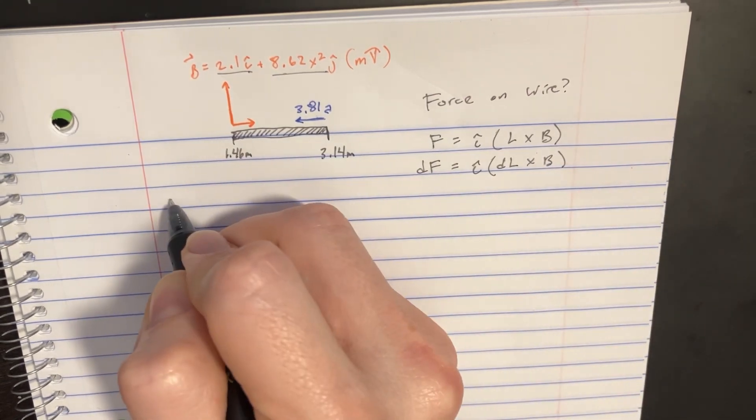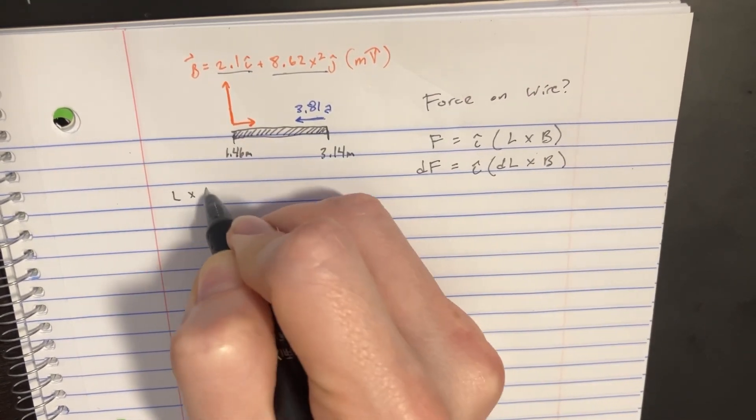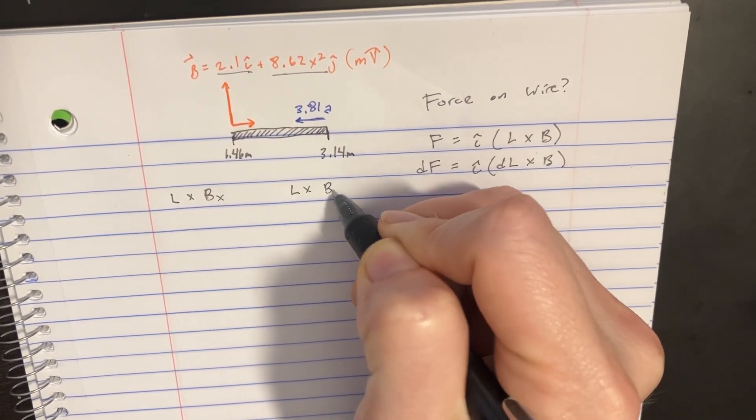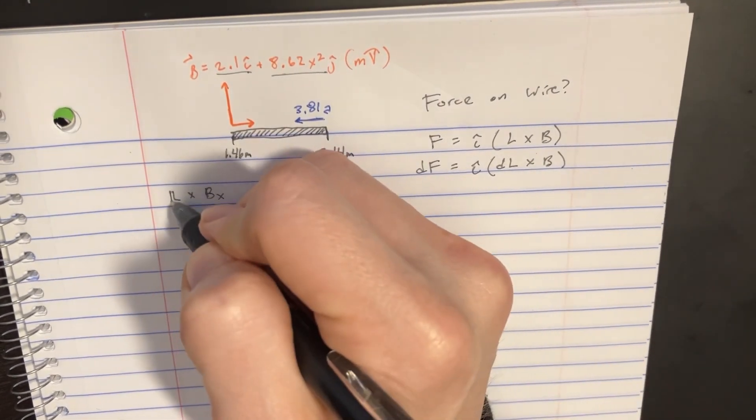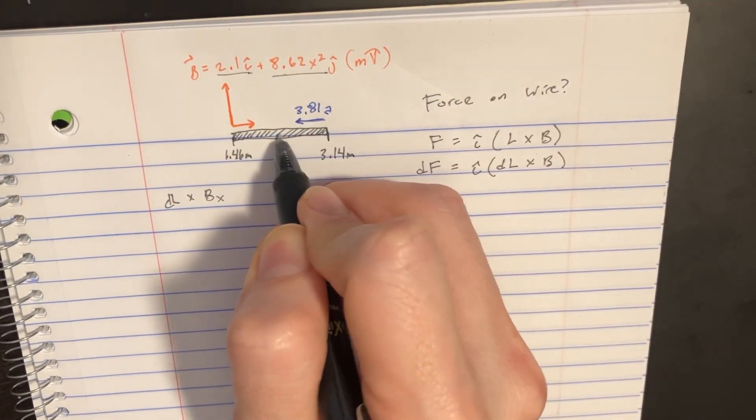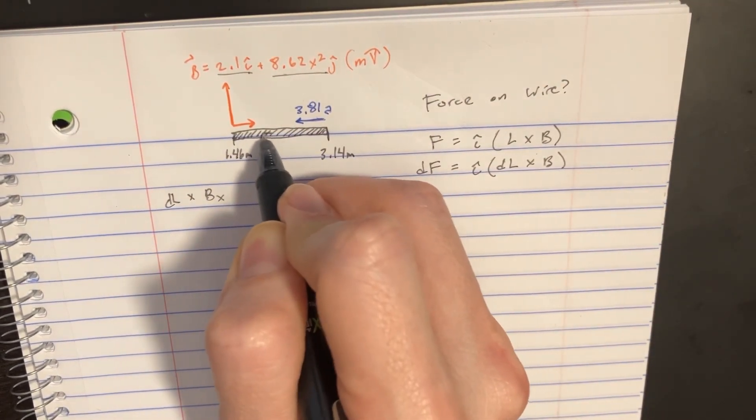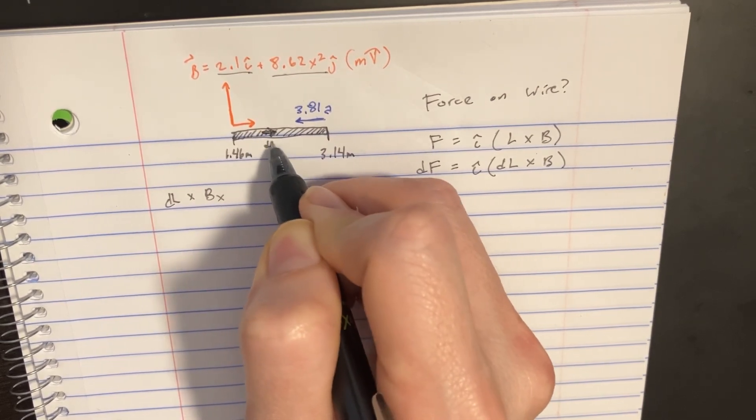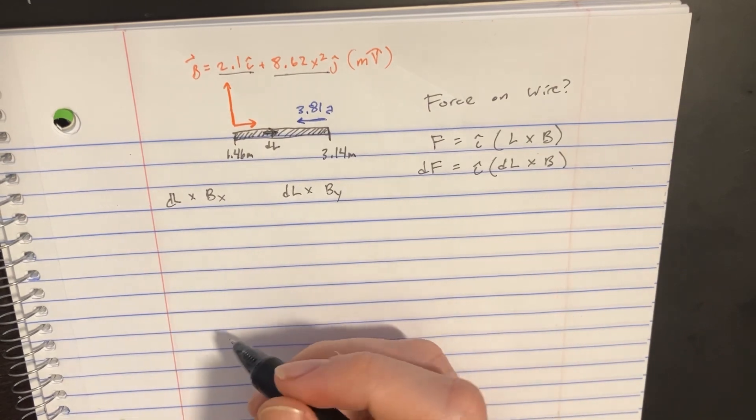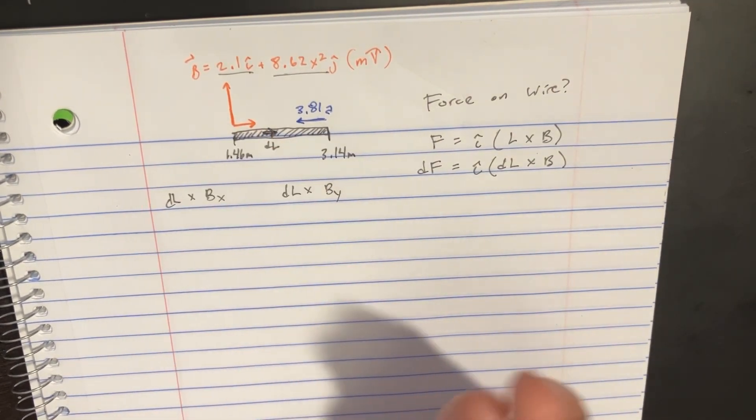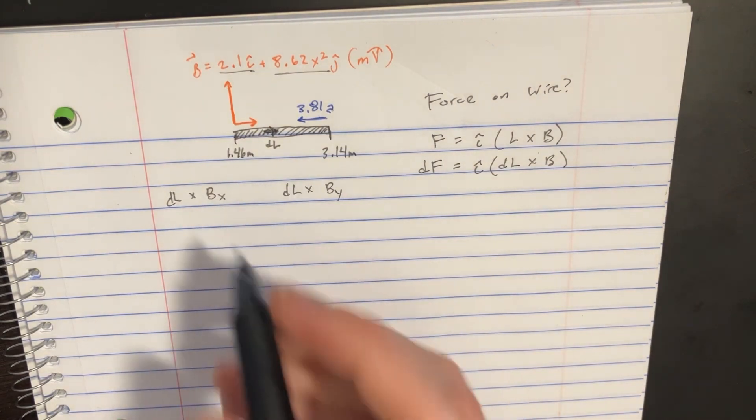First we'll think about L cross B_x, and then L cross B_y. We can go at any point here - we'll start with this one and call it our dL going in that direction. If we try to cross this with B_x, we notice it's zero degrees.